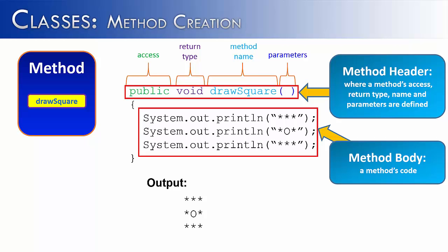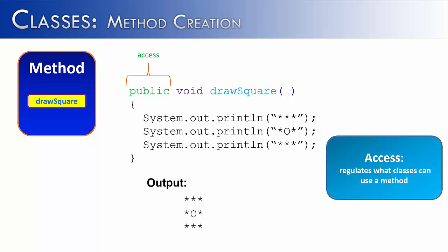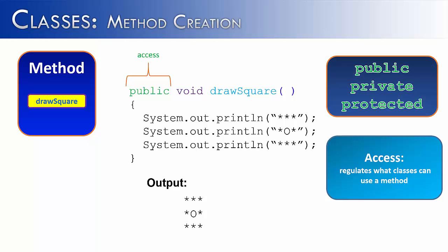The first part deals with access. Access regulates what class can use a method. Do I want just the class that I'm in to be able to use the method? Do I want everyone to be able to use it? Do I only want certain classes to be able to use the method? Most methods that we're going to start with are public, and what public means is everyone has access to it. But there are other keywords that we could put here. Instead of public we could say private, which means it only works inside of a class. Or protected, which means only certain classes have access to it, which we'll get more into later when we talk about inheritance.